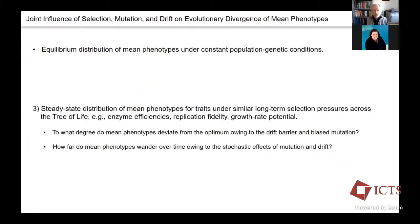The third approach, after the break today, concerns the equilibrium distribution of mean phenotypes. Here we'll be thinking about traits that have been under more or less constant selective pressure since they emerged — key metabolic enzymes and their efficiencies, replication fidelity, and growth rate potential. We'll be looking at the degree to which mean phenotypes evolve, thinking about them wandering around some optimum value over evolutionary time, and asking: how free are things to drift, and how does biased mutation play a role?